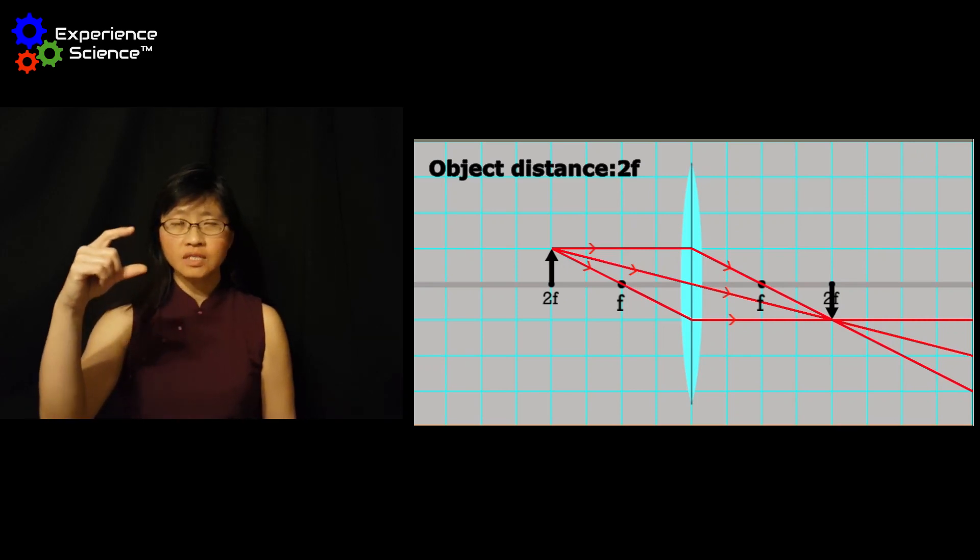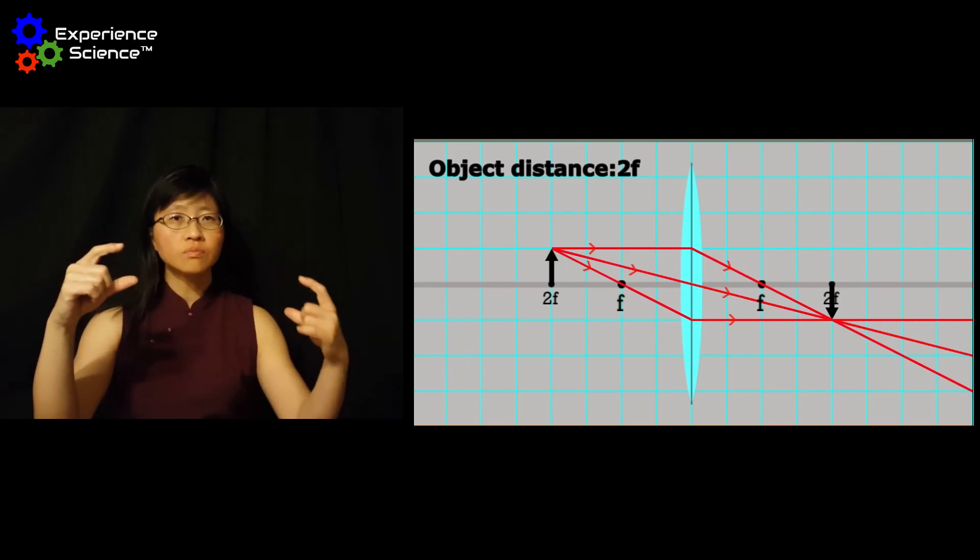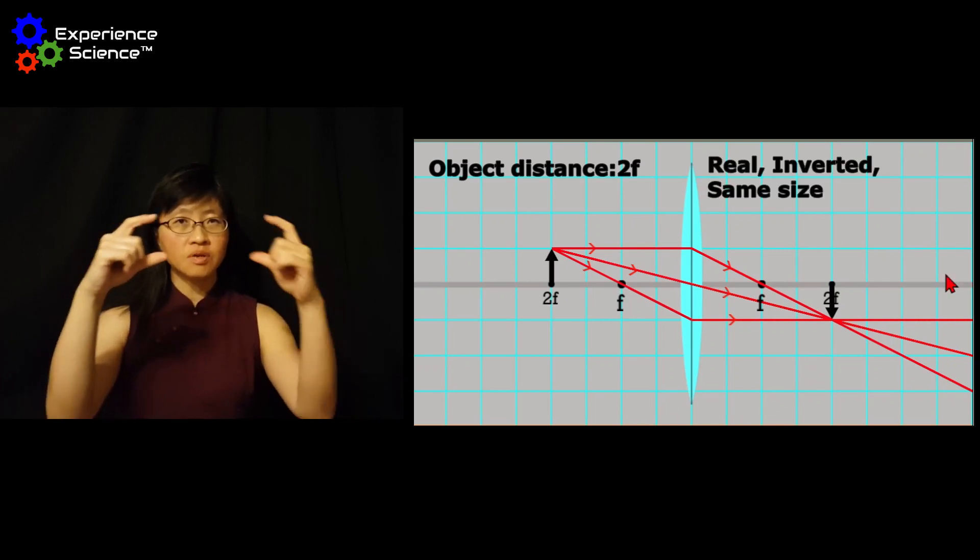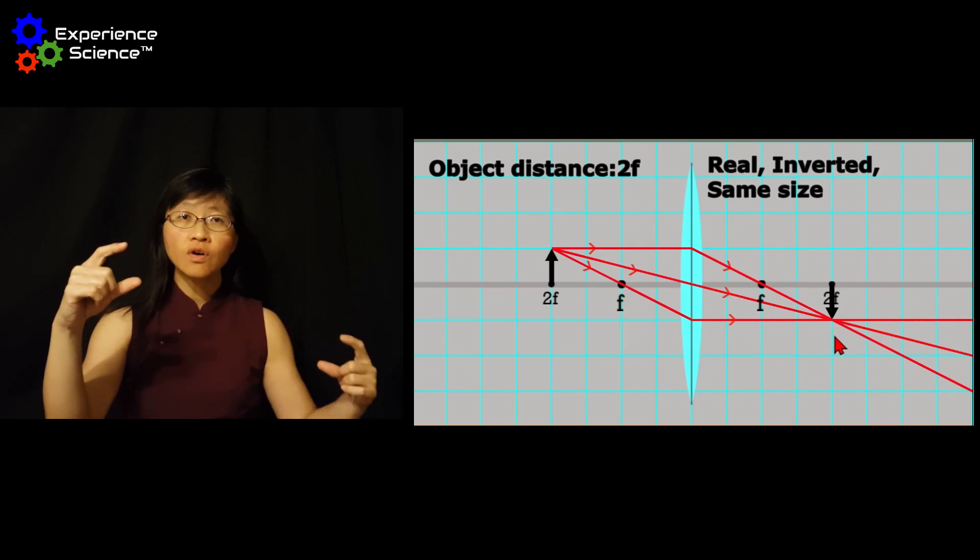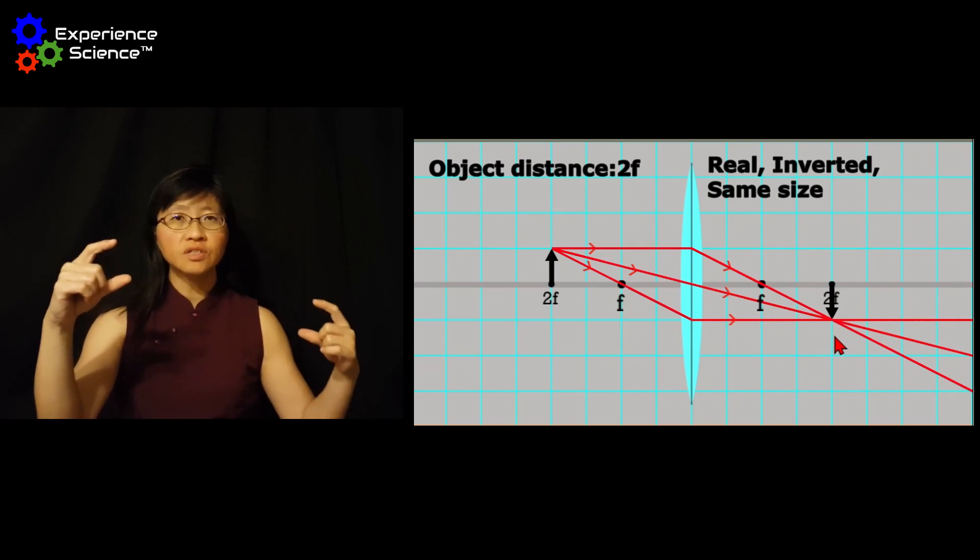When the object is at 2F, the image formed will also be at 2F, and the image size will be the same as the object. The image formed will be real and inverted.